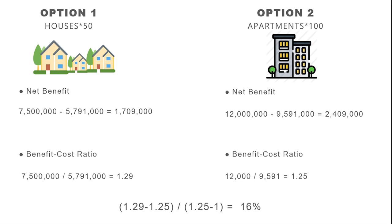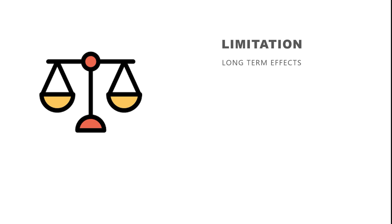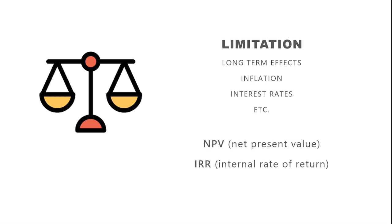So when should we apply CBA and when CEA? We should do both before decision-making. If the goal is to earn more money for the whole project, choose the option with the better net benefit. But if we want to earn as much as possible for each single euro spent, the one with the highest benefit-cost ratio wins. However, for bigger decisions with a longer time horizon, CBA can sometimes fail to account for factors not significant in the short term but impactful long-term, such as inflation, interest rates, and other macro factors. For these calculations, net present value or internal rate of return are often better methods.